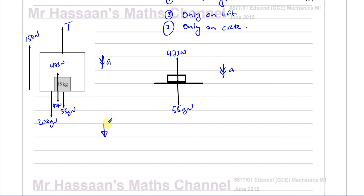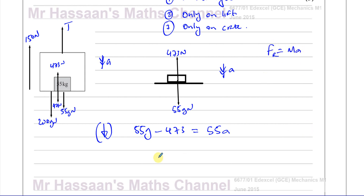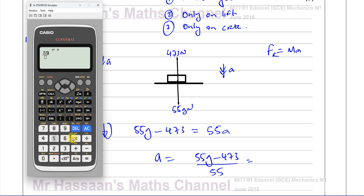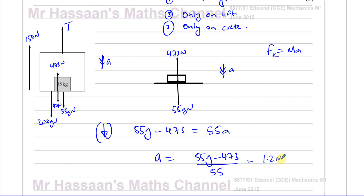Taking downwards as positive and applying F = ma for the crate: 55g minus 473 equals 55 times a. Therefore, the acceleration a equals (55g − 473) / 55. Substituting g = 9.8: (55 × 9.8 − 473) / 55 = 6/5 = 1.2 metres per second squared.